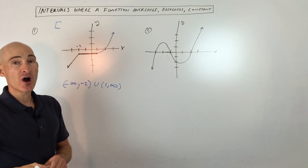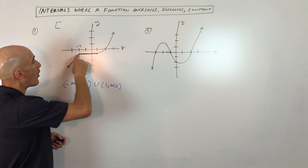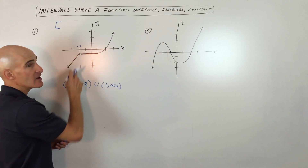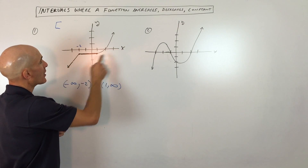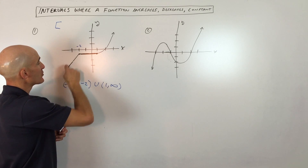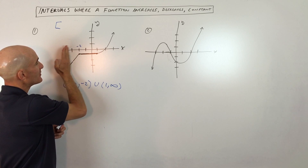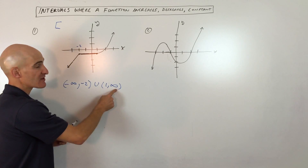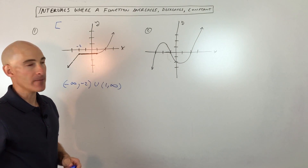Where students sometimes go off the tracks is they'll start thinking about the y values. They might say it's increasing up until y equals negative one — that's not correct. You want to think about what the x values are. What the y values tell you is that they're increasing only when x is from negative infinity to x equals negative two. These really represent the x values where the y values are increasing, or where the graph is going up.